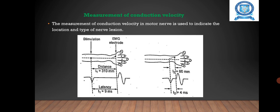Then we can see the measurement of conduction velocity. The measurement of conduction velocity in motor nerve is used to indicate the location and type of nerve lesion. It is examined directly at various segments by means of stimulating it with brief electric shock having pulse duration of 0.2 to 0.5 milliseconds. In this conduction velocity, we have one word: latency. Latency is defined as the elapsed time between the stimulating impulse and the muscle action potential.